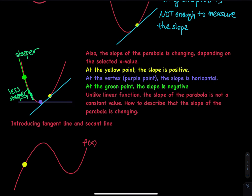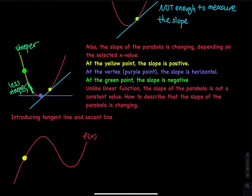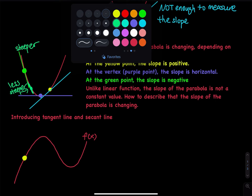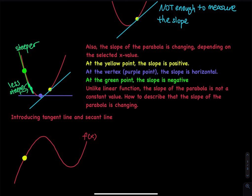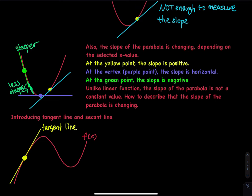Go back to the method I just introduced: we have to draw a tangent line. So let me go ahead and draw a tangent line — this is a tangent line. What is a tangent line? A tangent line is a straight line — not a curve — that touches the point exactly one time. It's a straight line touching the point that you want exactly one time.